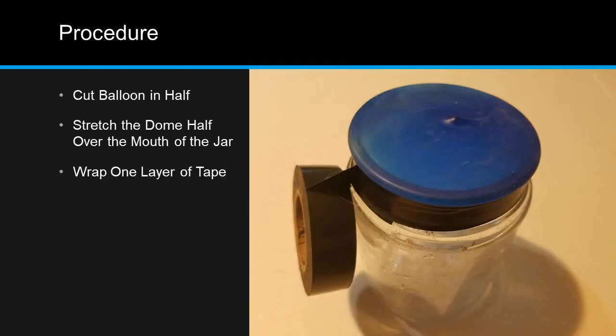Wrap one layer of electrical tape around the open end of the jar below the lip over the cut end of the balloon. This will hold the balloon in place further and keep it from sliding off.